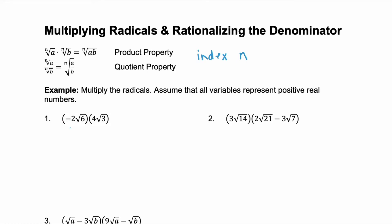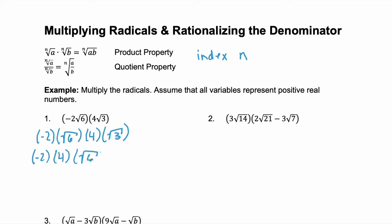In example 1 we're going to multiply the radicals, and remember we're assuming that all of our variables are positive real numbers. Here we just have individual terms that we're multiplying together. So we have negative 2 times the square root of 6 times 4 times the square root of 3. We're going to rearrange these factors so that we have our coefficients together and our radicals together: negative 2 times 4, and then square root of 6 times the square root of 3. Negative 2 times 4 is negative 8, and then we use the product property on the square root of 6 times the square root of 3, which gives us the square root of 18.